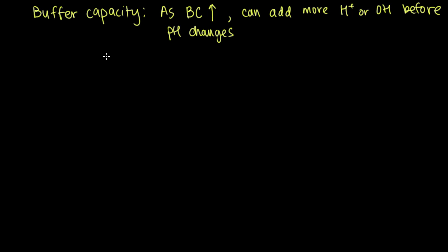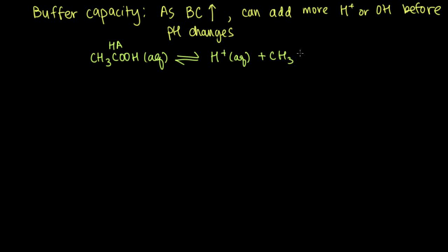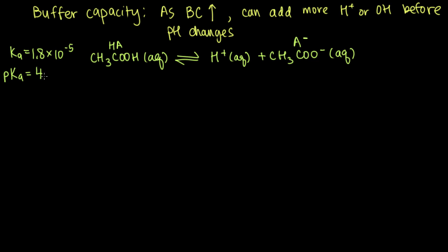The example we're going to look at is going to be using an acetic acid buffer. Acetic acid is CH3COOH, and we're going to abbreviate that in this talk using HA. This is an aqueous solution, and it is reversibly reacting to form H+ ion and CH3COO-, or acetate. We're going to abbreviate acetate as A-. The Ka of acetic acid is equal to 1.8 times 10 to the minus 5, and if we take the negative log of that, we get the pKa, which is 4.74.